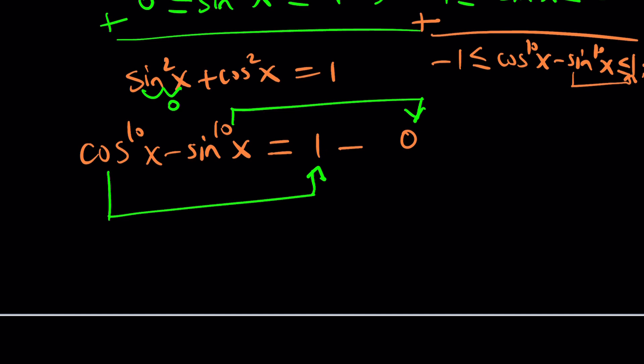But at least we know that if cosine x to the 10th power is 1, and—and is important here—sine x to the 10th power is 0, then Houston, we have a solution. Great. Let's go ahead and explore a little bit more what this means.